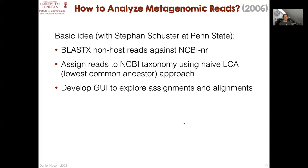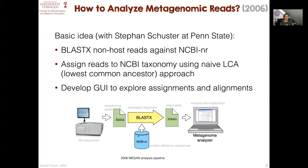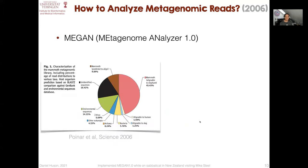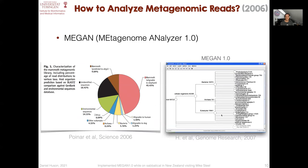We started developing a program to make this possible, and back in 2006 we had the first MEGAN metagenomic analysis pipeline. It's a very simple pipeline: you start off with your 454 sequences, run BLASTX against the NR database, and then the MEGAN program would parse the BLASTX output file and allow you to interactively explore and analyze the results. This was MEGAN version 1.0.